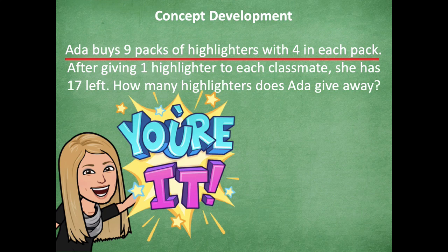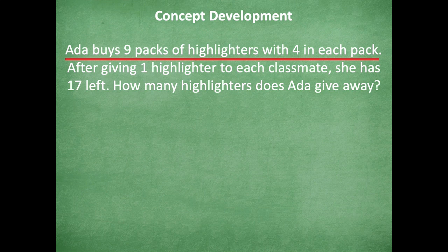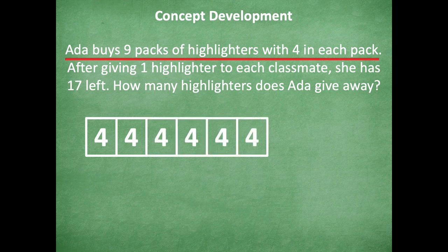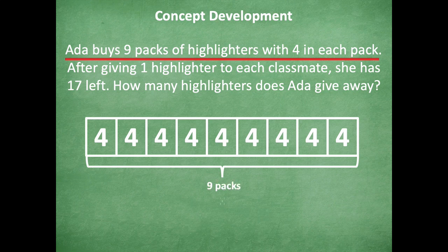Make sure to pause if you need more time. Here's how I solved it. I drew a tape diagram — I know there are four in each pack and nine packs of highlighters, so I have one pack, two, three, four, five, six, seven, eight, nine. All of this represents nine packs of highlighters, which I label H for highlighters — that's the total number. I saw that this is nine times four, because I have nine groups with four in each group, representing H. So H equals 36 because nine times four is 36.